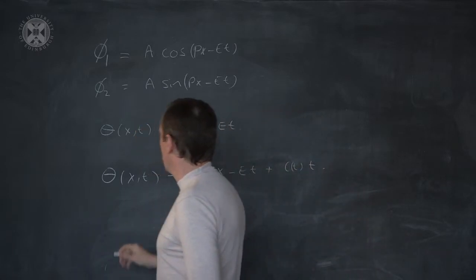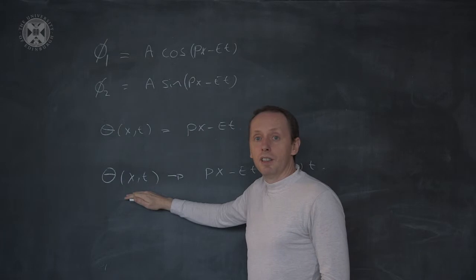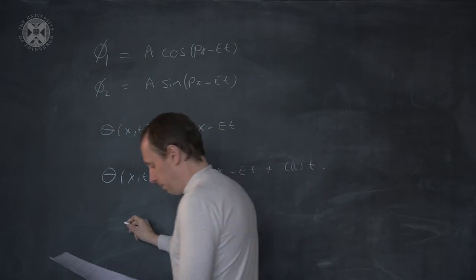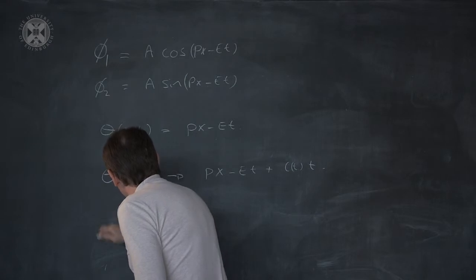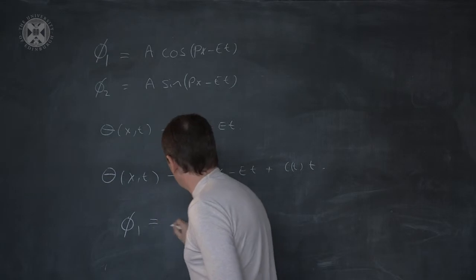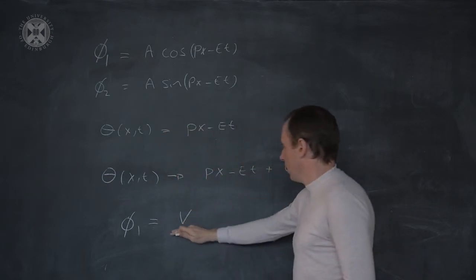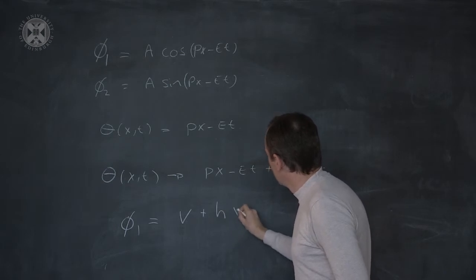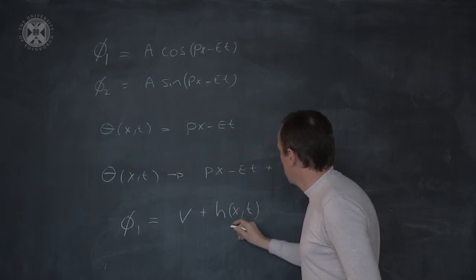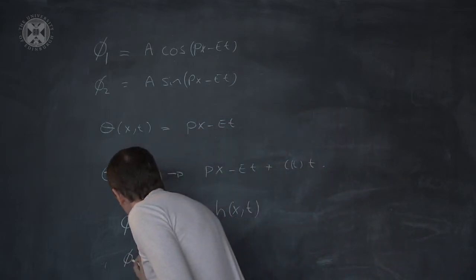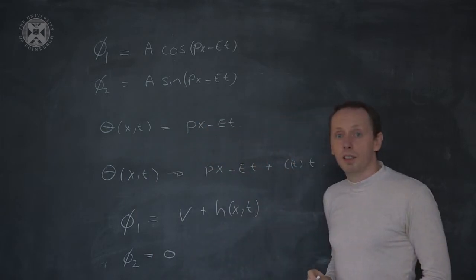In other words, we can redefine the electromagnetic potential in order to make the wave function phi have the form of a vacuum expectation value plus a real radial oscillation, and phi-2 is simply zero.